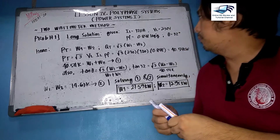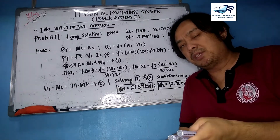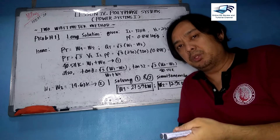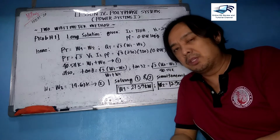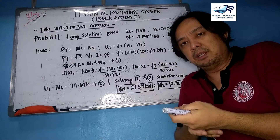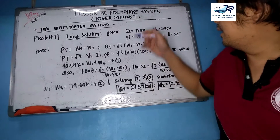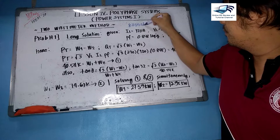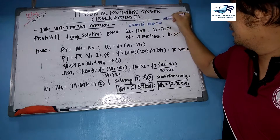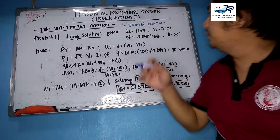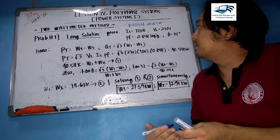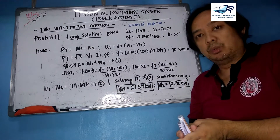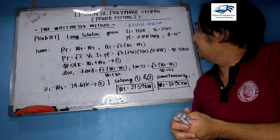Before we solve, let us check if the problem is under balanced or unbalanced condition. Since the problem does not mention different currents, voltages, or impedances, this is a balanced condition. The given values are: line current = 120 amperes, line voltage = 230 volts, power factor = 0.848 lagging.